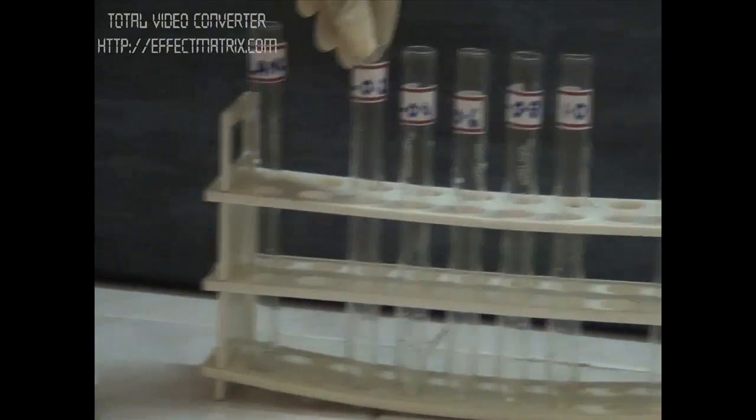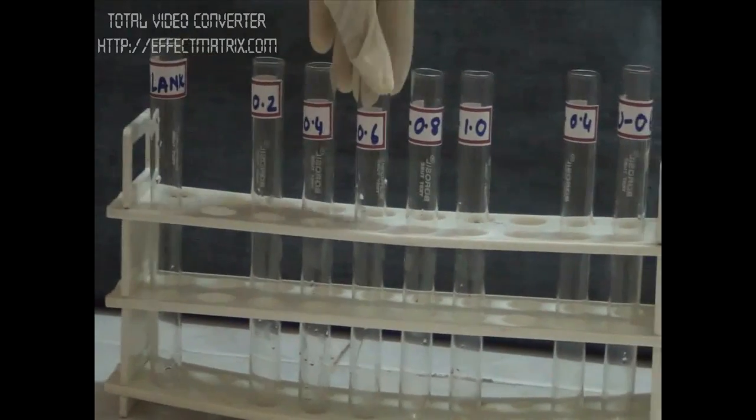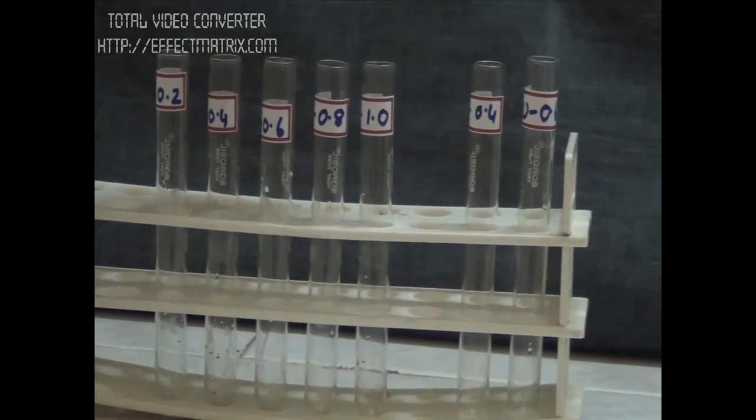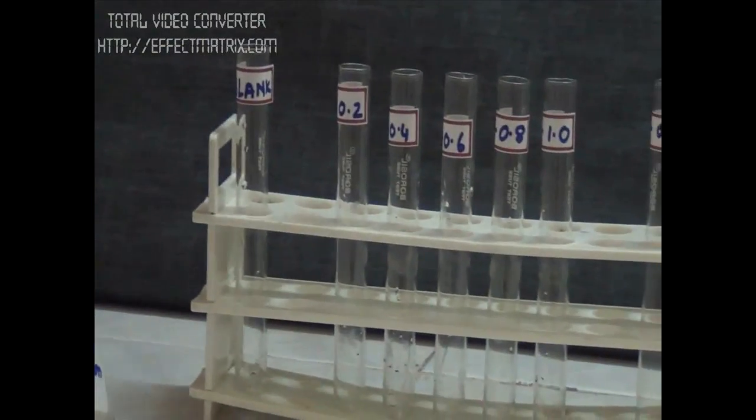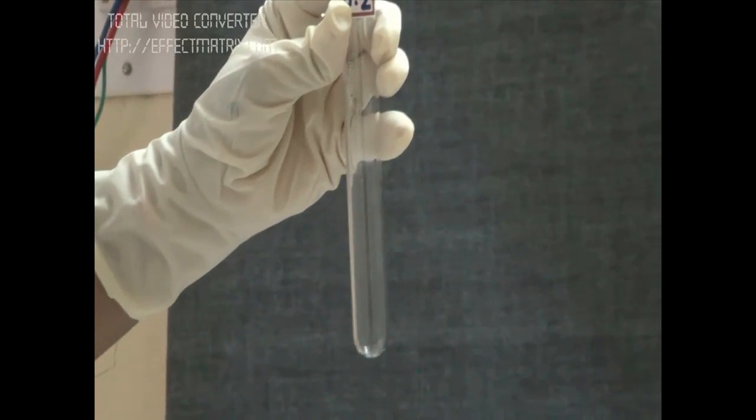We are taking aliquots as 0.2, 0.4, 0.6, 0.8 to 1 ml. In the blank, we don't have to add any RNA. So in the first standard tube, I will take 0.2 ml of the standard RNA solution.